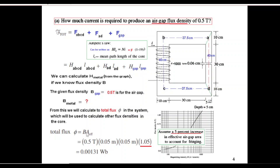B for the air gap is given as 0.5 T. Area of the air gap, you can see the width is 5 cm and depth is 5 cm, so the area will be 5 times 5. But there is an increase of 5% due to fringing effect, so we have to multiply it by 1.05. So this is our total flux.